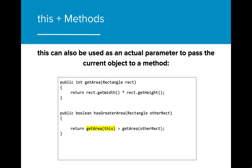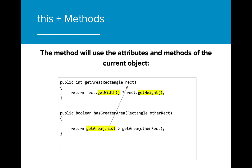This can also be used as an actual parameter to pass the current object to a method. If we change the previous method getArea to have a rectangle object as a formal parameter, we can call getArea(this) in the hasGreaterArea method to pass the entire rectangle object to the getArea method. Now when getArea is called, getWidth and getHeight will be called on the object referred to as this.